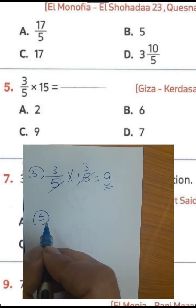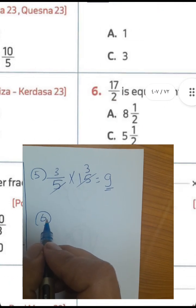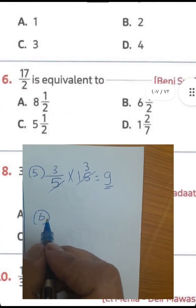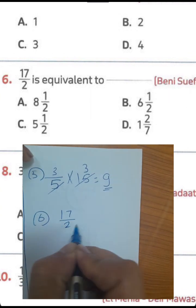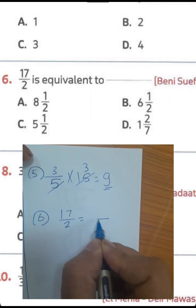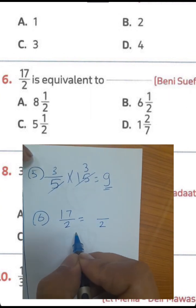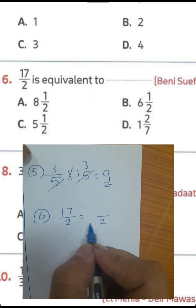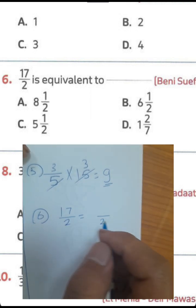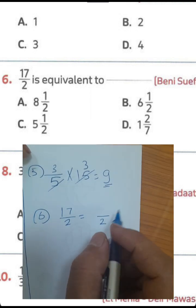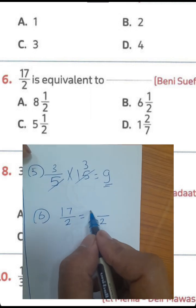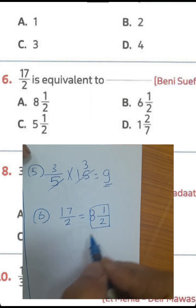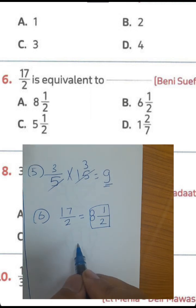Question number 6: 17 over 2 — we need to find the value by division. 17 divided by 2 equals what? 2 times 8 equals 16, and the remainder is 1, so it will be 8 and a half.